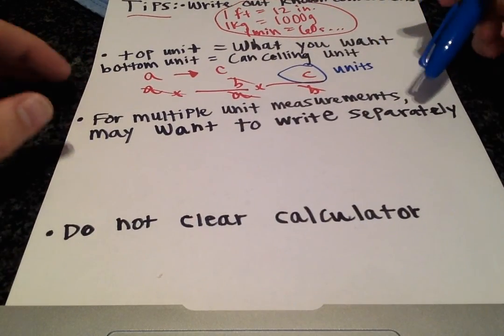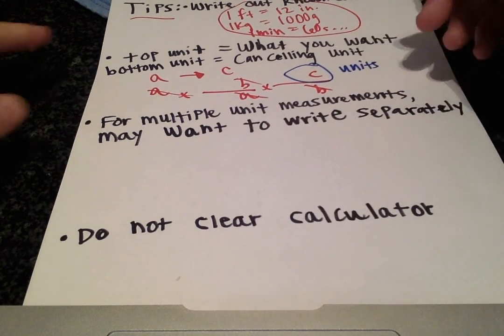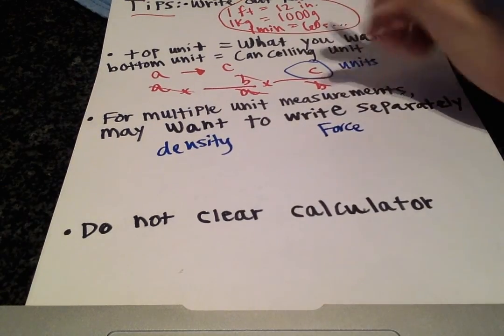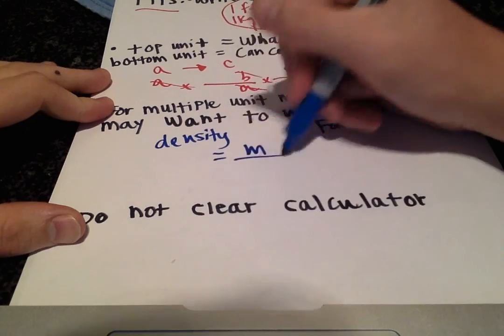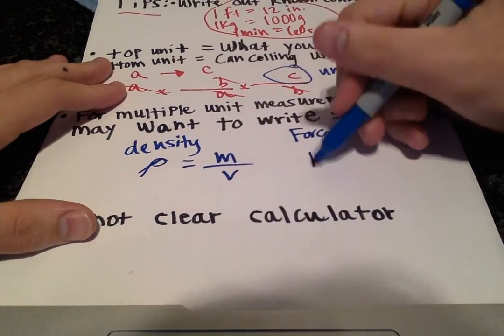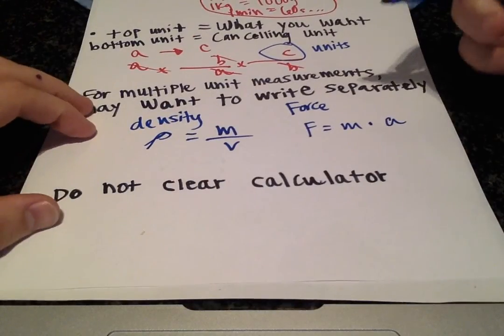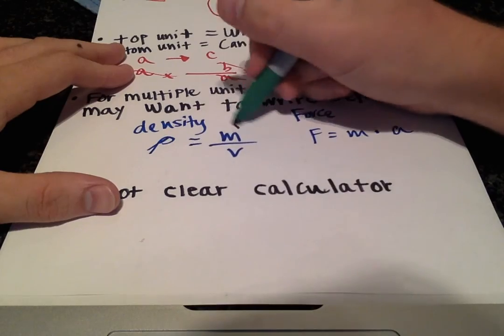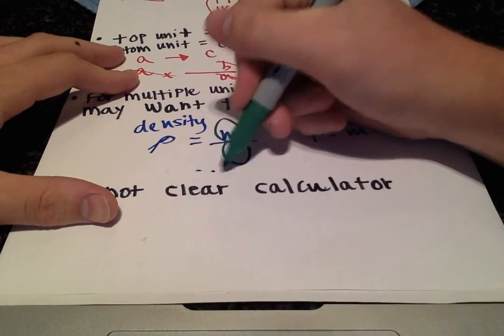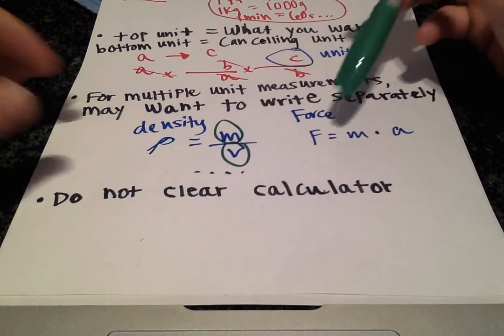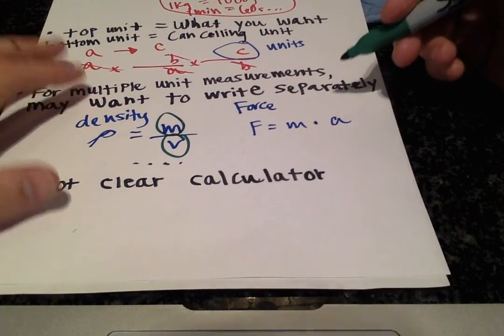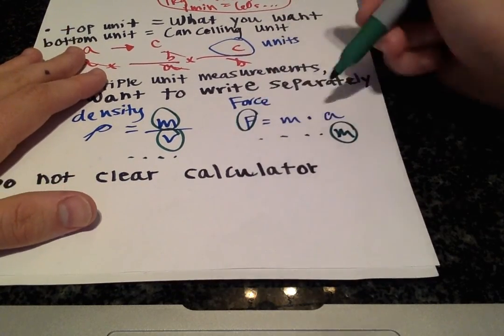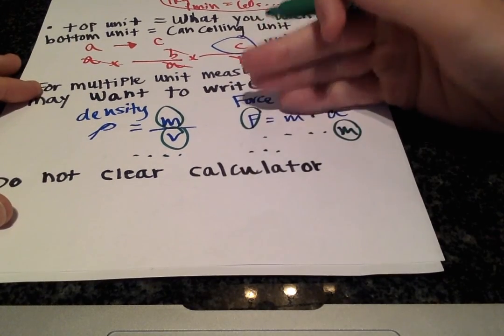For multiple unit measurements, you may want to write separately. What I mean by this is if you take a look at either density or force, these are measurements that involve more than one unit. Density is mass over volume and force is mass times acceleration. When working with different masses or volumes or masses or accelerations, you might want to calculate them individually. First calculate the mass or first calculate the volume and then plug that in into the appropriate equations. This can be kind of confusing. Instead of doing it in one long line, you may want to first just calculate your mass or calculate your force and then go from there and take a little pause and then go on to the next equation.